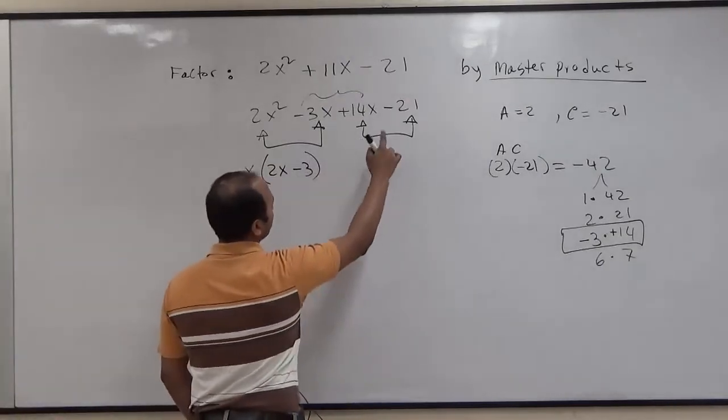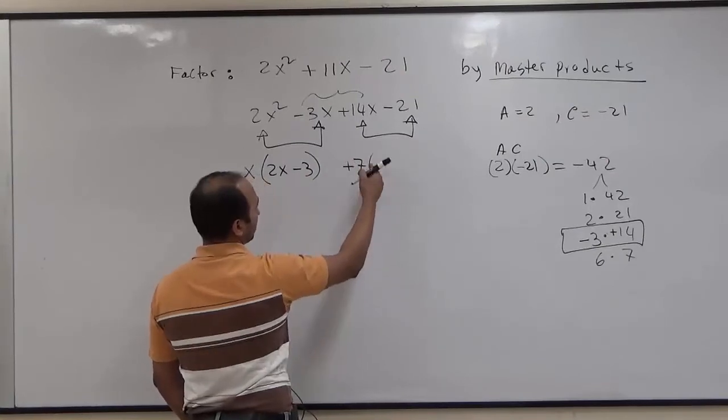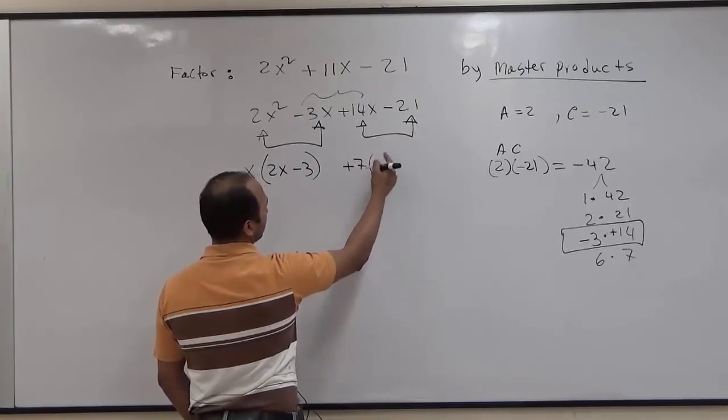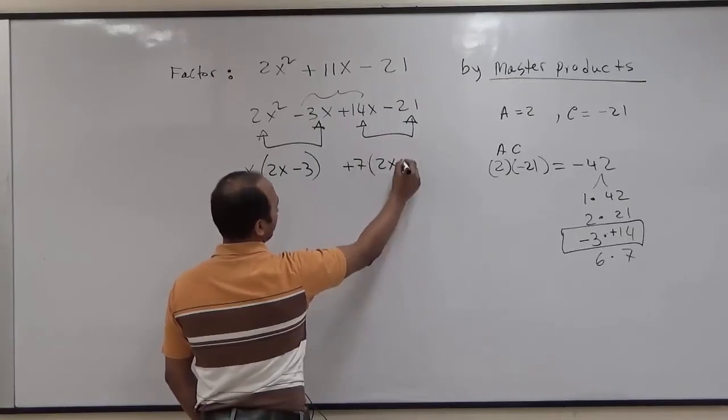And from the second group, we're going to factor out positive 7. That will leave us in the parenthesis 2x minus 3.